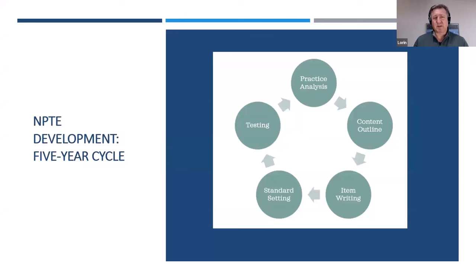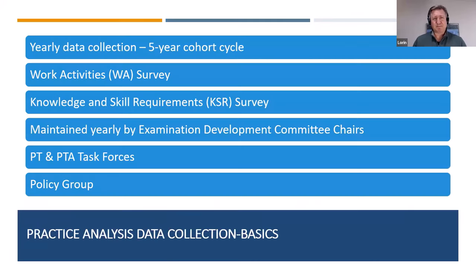From that, we derive the content outlines. We begin writing items. We go through a process called standard setting where we decide, on a given test form, how many questions you need to get correct in order to pass. And then once all that work is complete, we begin testing. We're through everything here but that last bubble — testing.